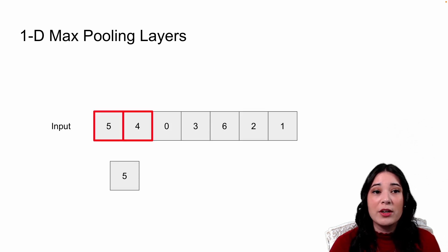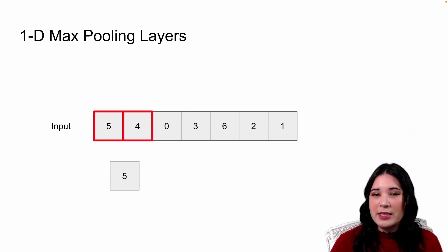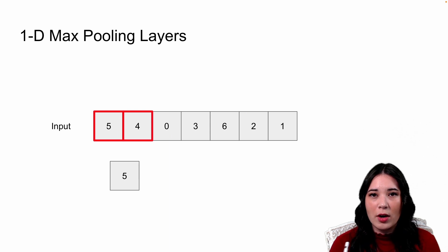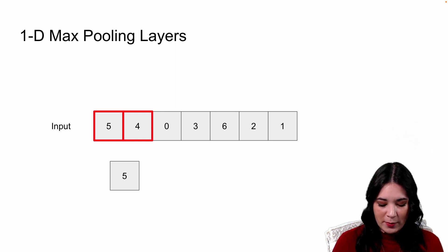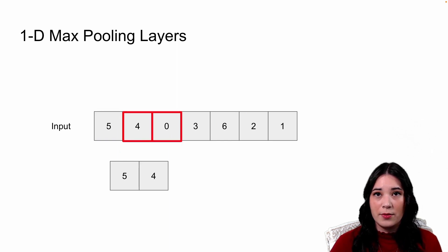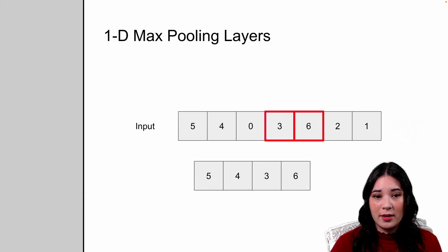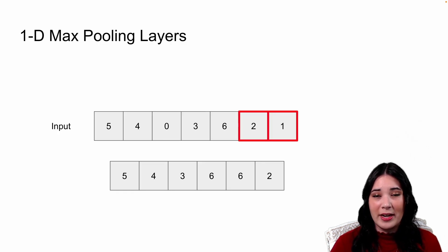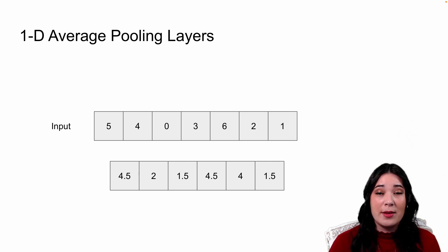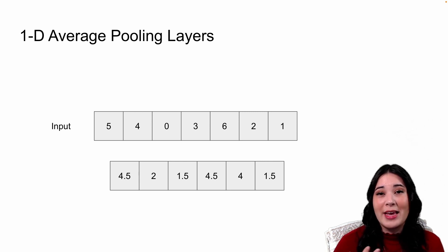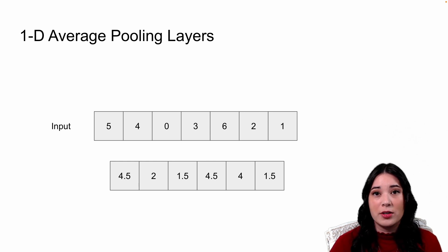Just like before, we can also use max pooling to downsample our information. Here I have a two-by-one filter that slides across our sequence and returns the maximum value from that filter. At the first placement, the maximum value is five, then four, then three, then six, then six again, and finally two. We could also use average pooling, which slides a filter across our sequence but instead of returning the maximum value, returns the average value, thus smoothing out our sequence.